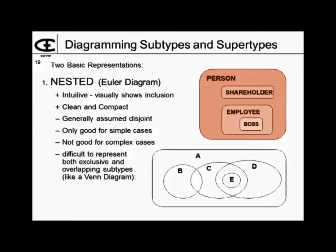How do we diagram subtypes and supertypes? There are two basic ways. We can either show them nested — some people call that an Euler diagram. In this example, a shareholder is a subset of a person, an employee is a subset of a person, and a boss is a subset of an employee. It's intuitive, clean, and clearly shows that something is inside of or a subset of another. However, it's only good for simple cases; it can be difficult to represent both exclusive and overlapping subtypes as in a Venn diagram.